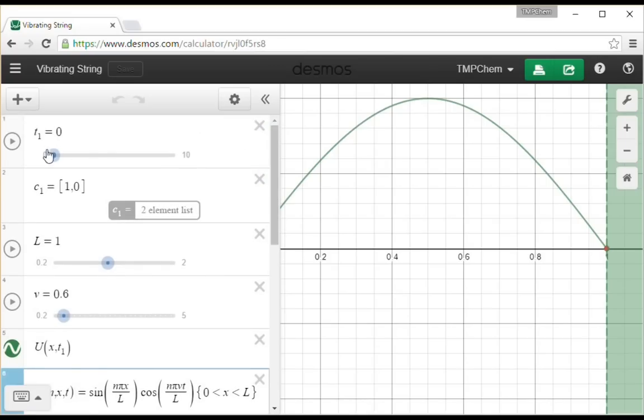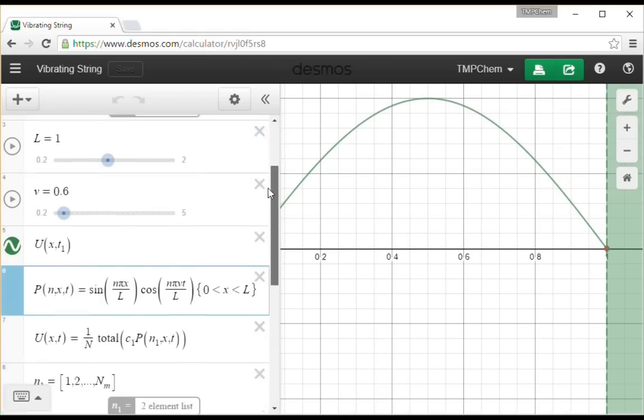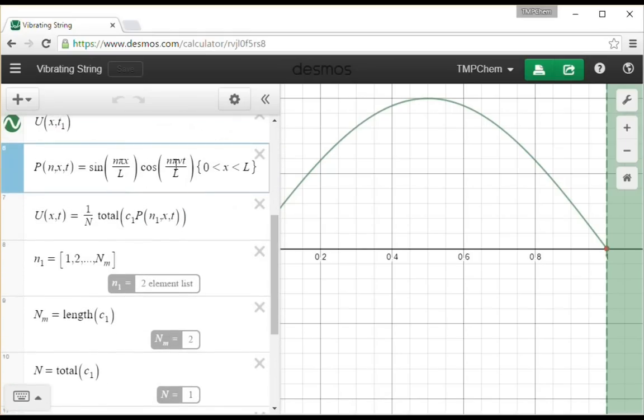We're going to do this animation over a period of time. That's for an individual normal mode solution, as we said from our previous video. The total function is going to be a constant times this individual normal mode. This n1 is just the values of n of 1, 2, all the way up to some maximum number determined by the length of this array of coefficients.